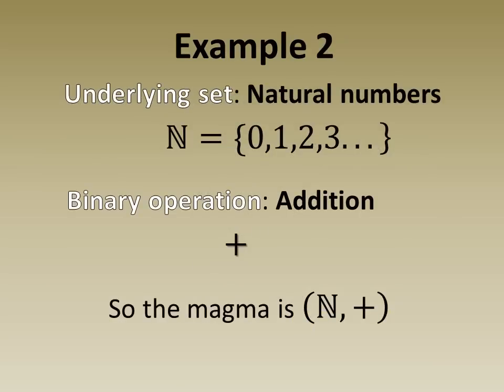In example 2 we have the natural numbers under addition. Addition is closed on the natural numbers as a consequence of both its definition and Peano's axioms. So we have a magma.